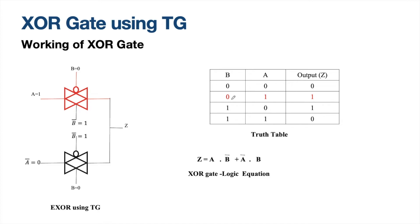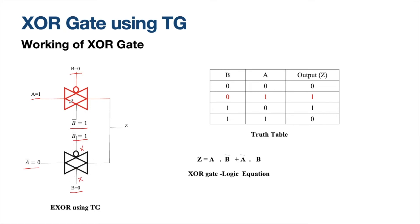Next combination: A equals 1 and B equals 0. A is 1, so A_bar equals 0. B is 0, so B_bar equals 1. Since 1 is given to PMOS of TG2, it is off; 0 to NMOS makes TG2 off. TG1 receives 0 to PMOS and 1 to NMOS — so TG1 is on. A equals 1, so that is transferred to output. Z equals 1. Verifying in the truth table: for A=1 and B=0, output is 1 — correct.